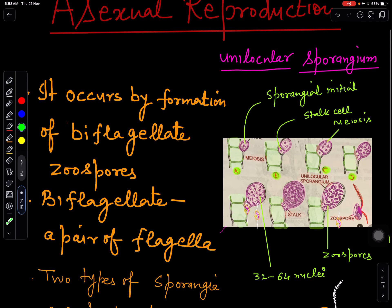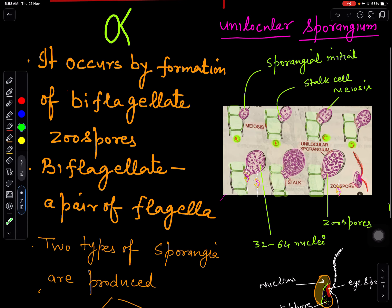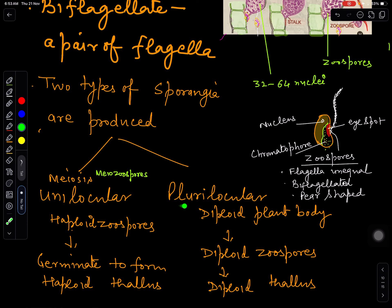First we are going to discuss about unilocular sporangia. As we discussed, this happens by the formation of zoospores, and these zoospores are motile. The zoospore bears two flagella, so it is biflagellate in nature. Two types of sporangia are being produced: one is unilocular and the second is plurilocular.